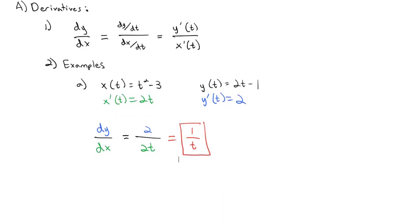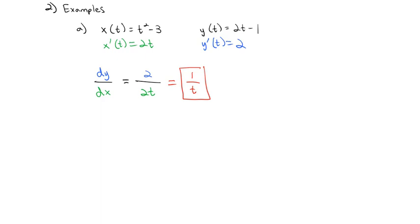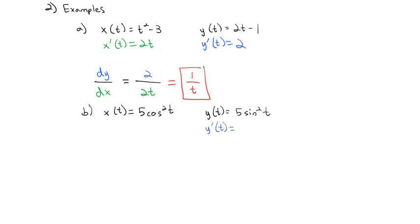Let's do one more example. Let's try x(t) = 5cos²(t) and y(t) = 5sin²(t). We need the individual derivatives. First, y'(t) = 5 times 2 sine t times cosine t (using the chain rule), which is 10 sin(t)cos(t).